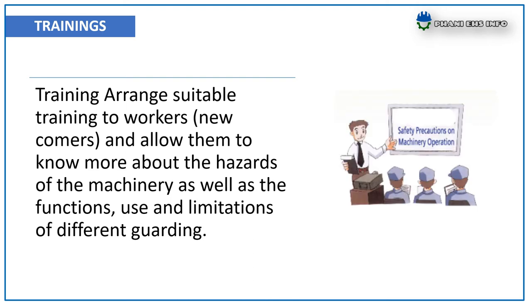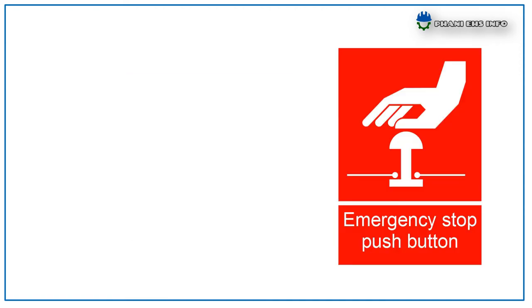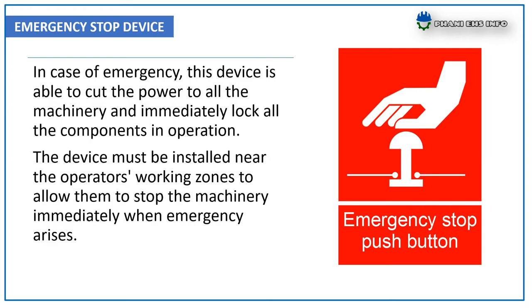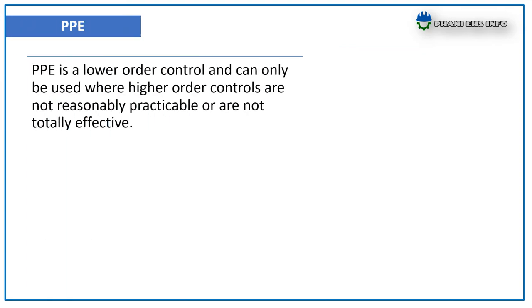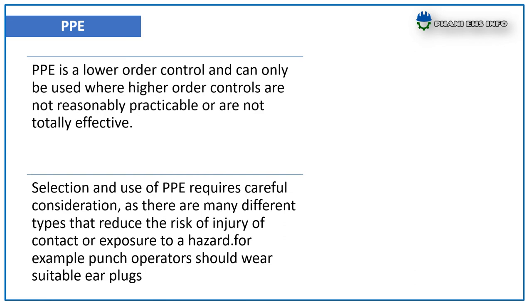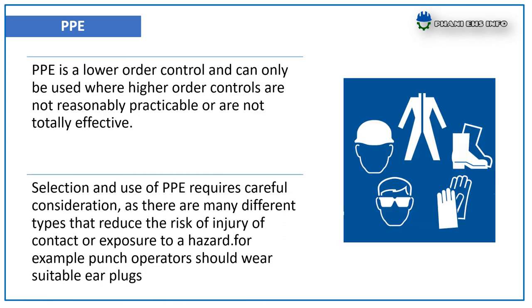Emergency stop device — in case of emergency, this device is able to cut the power to all the machinery and immediately lock all components in operation. The device must be installed near the operator's working zone to allow them to stop the machinery immediately when an emergency arises. PPE is a lower-order control and can only be used where higher-order controls are not reasonably practicable or not totally effective. Selection and usage of PPE requires careful consideration, as there are different types that reduce the risk of injury. For example, punch operators should wear suitable earplugs.